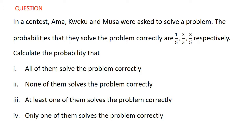The probabilities that they solved the problem correctly are 1/5, 2/3 and 2/5 respectively. Calculate the probability that: I) all of them solved the problem correctly, II) none of them solved the problem correctly, III) at least one of them solved the problem correctly, IV) only one of them solved the problem correctly.